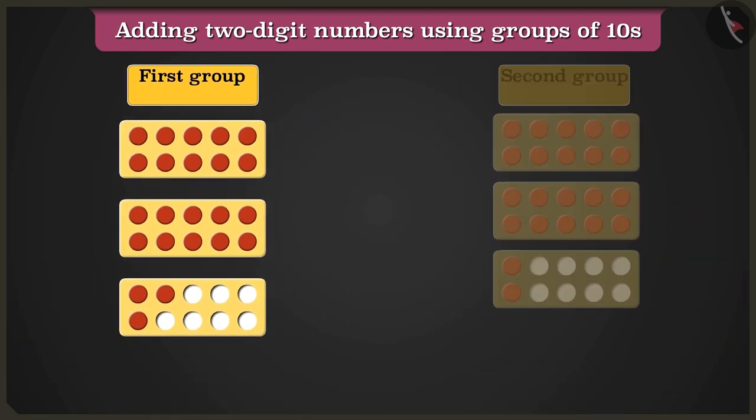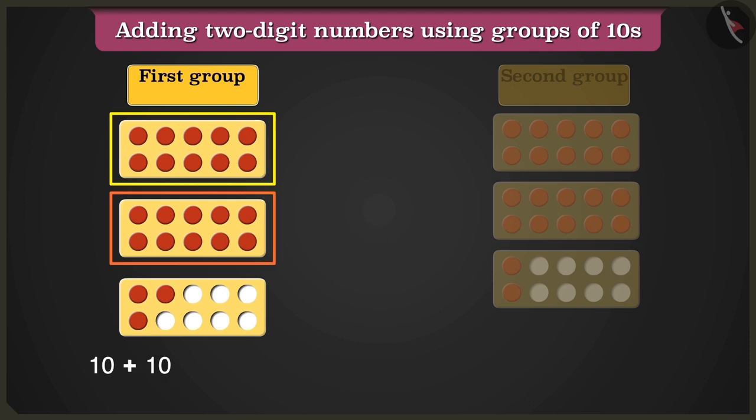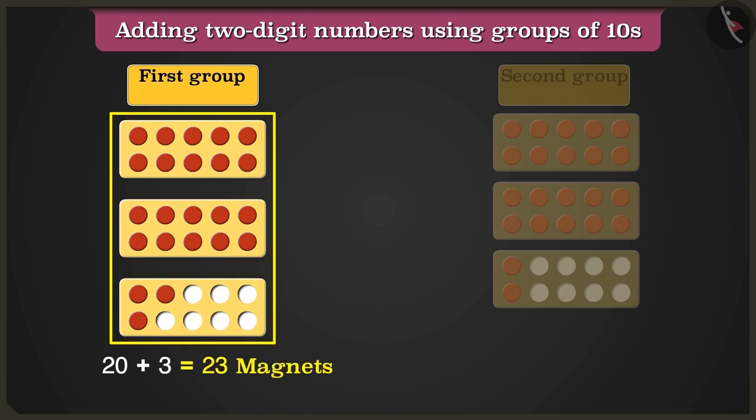In the first group of the 10s frame, adding 10 and 10 makes 20. 20 plus 3 equals 23 magnets.